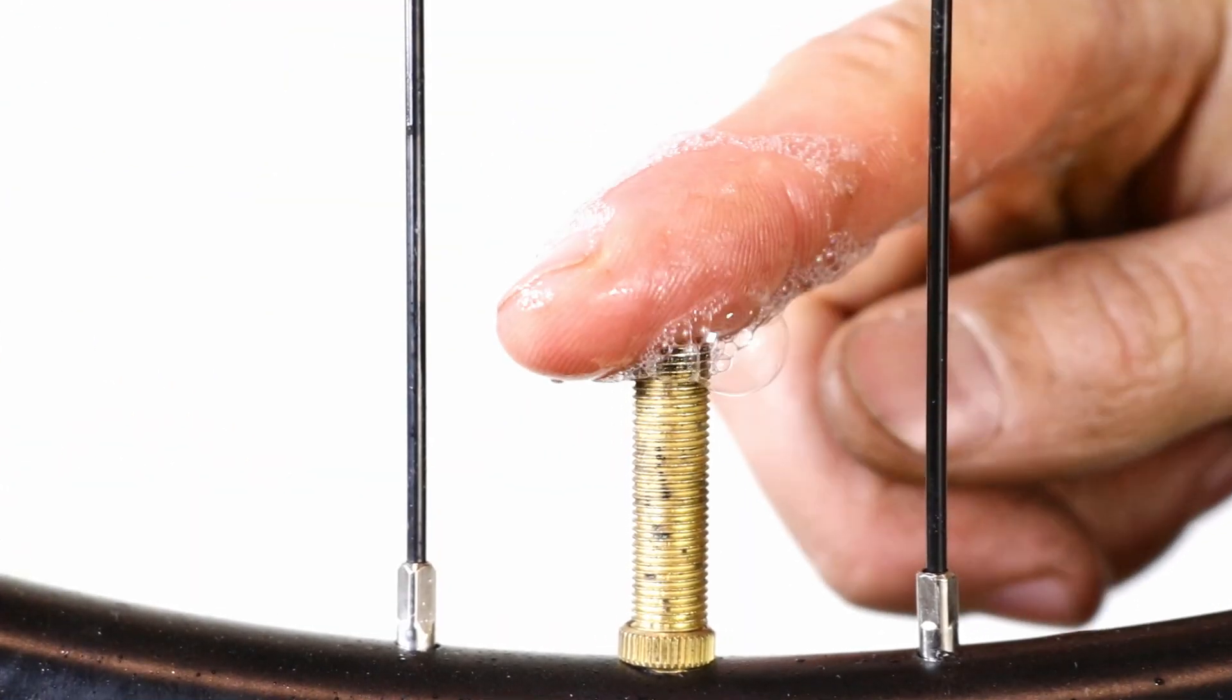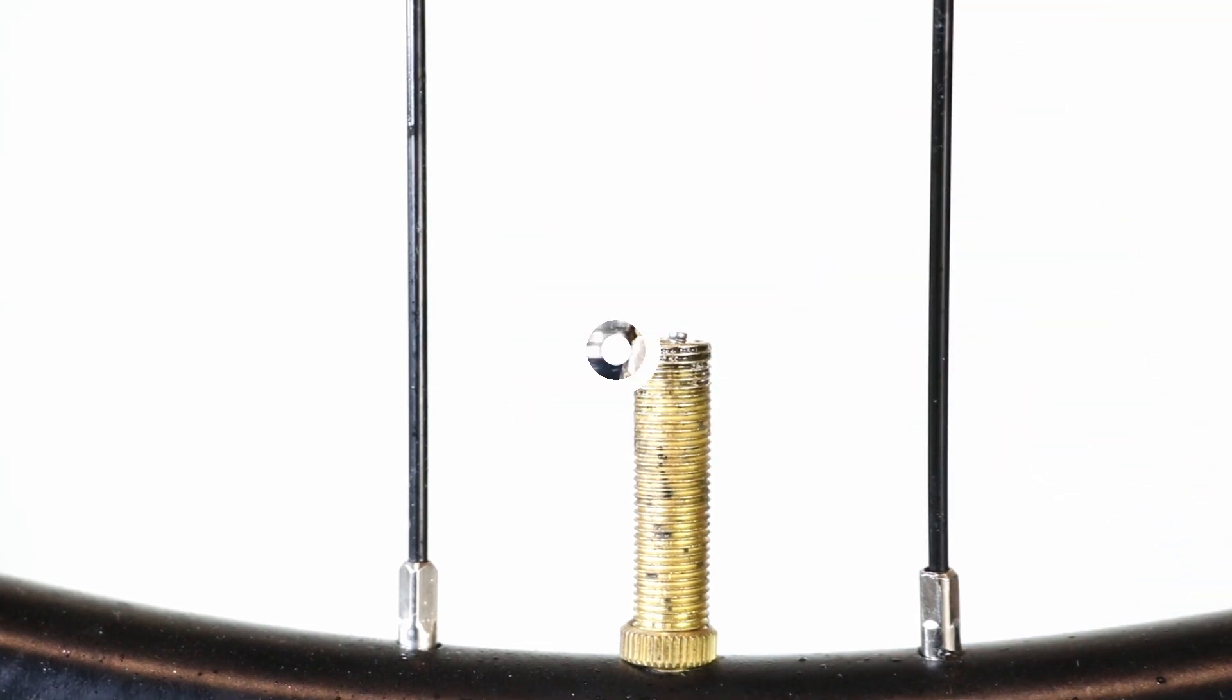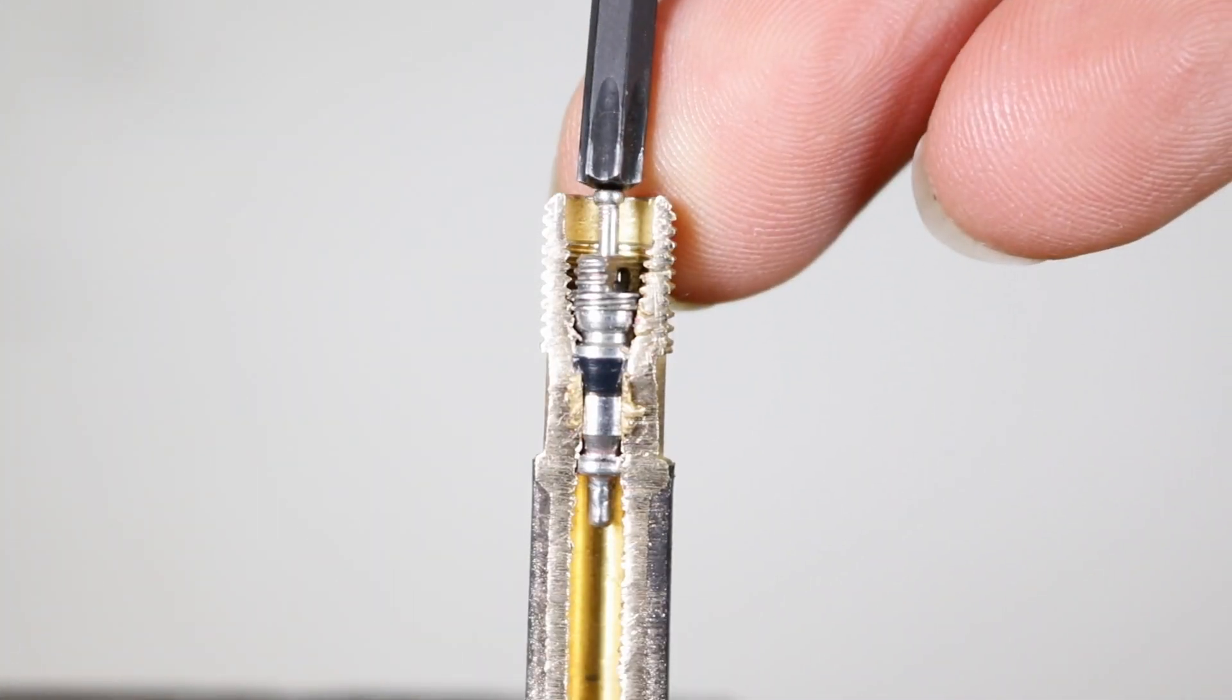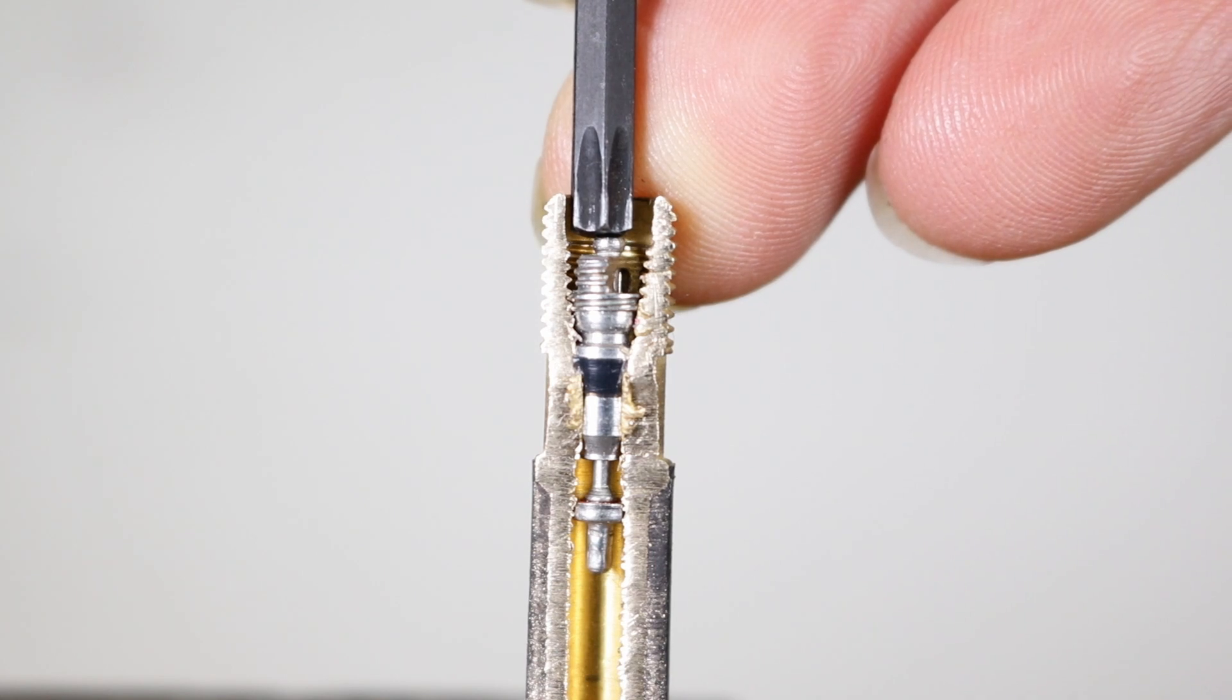Check the valve core once more and if bubbles still appear it's time to swap out the valve core. Use a 4 mm allen key or a pin to press the pip on the valve core letting the air out of the inner tube.